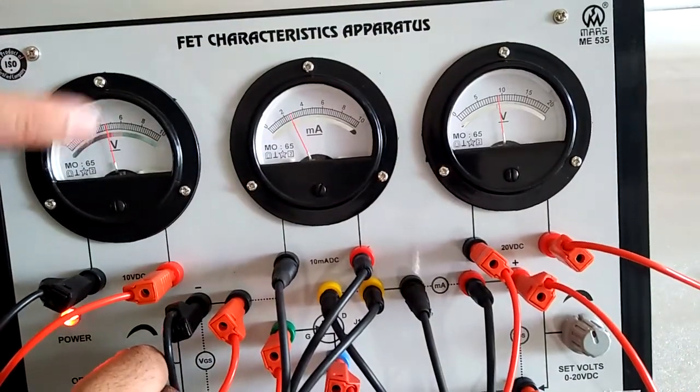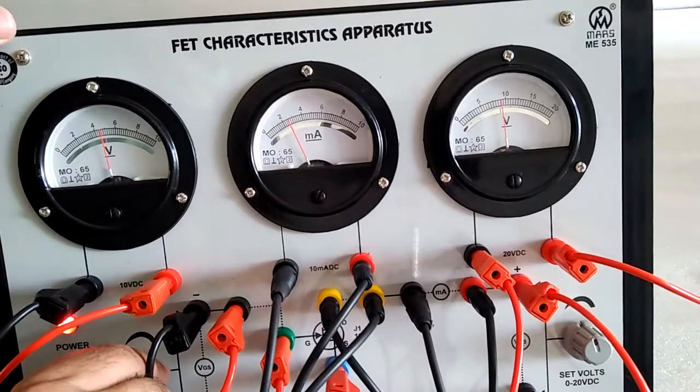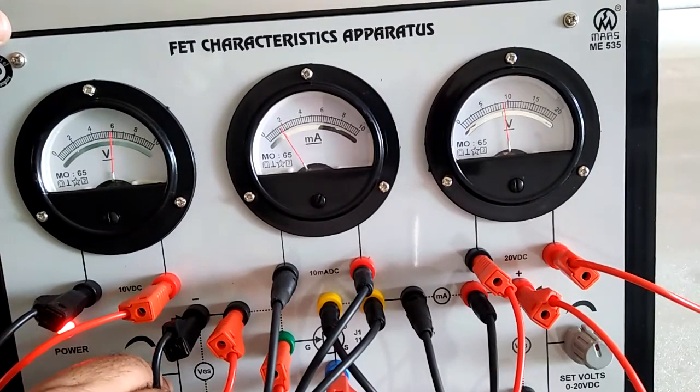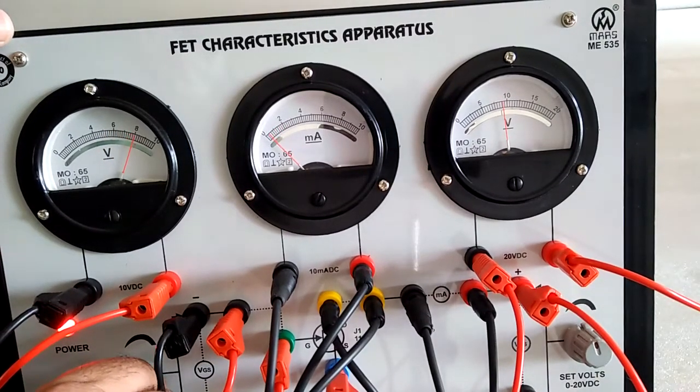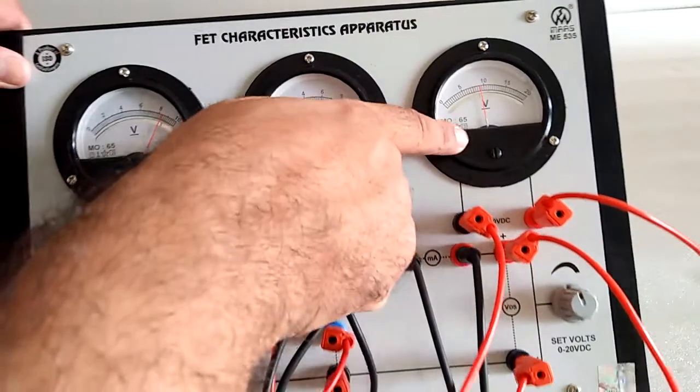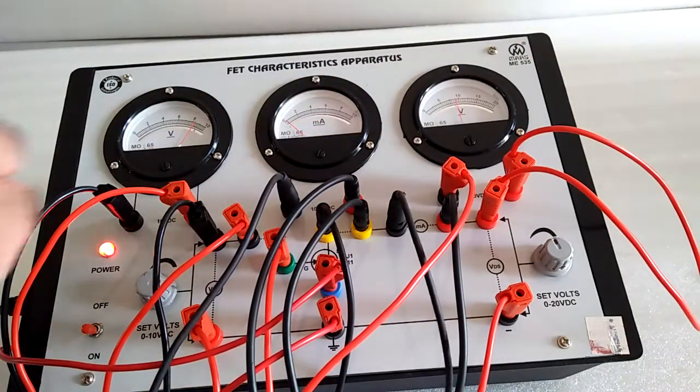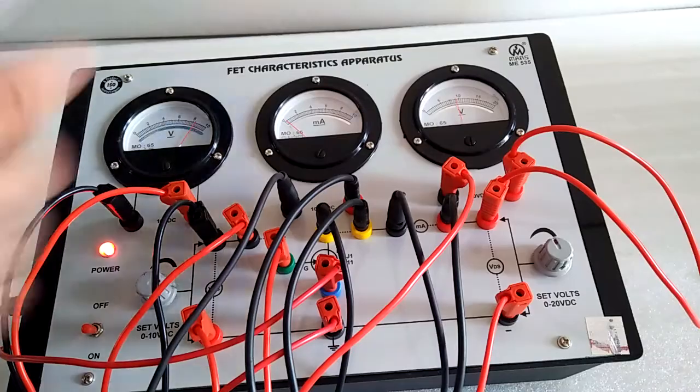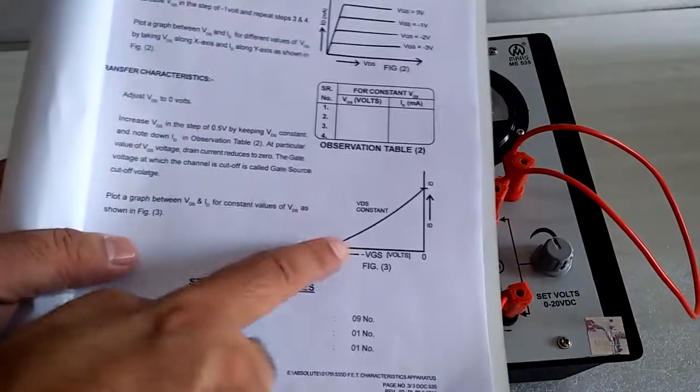Now what will happen, it will increase and ID will drop to zero at constant VDS. This is the transfer characteristics of the FET.